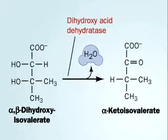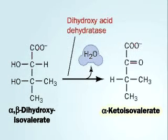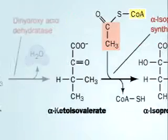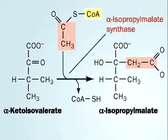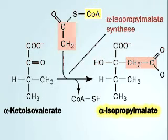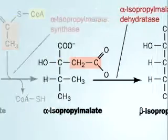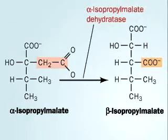A dehydration produces alpha-ketoisovalerate and a molecule of water. Acetyl-CoA contributes an acetyl group, making alpha-isopropylmalate, which then isomerizes to beta-isopropylmalate.